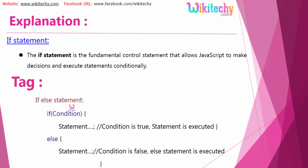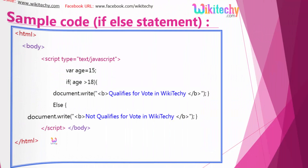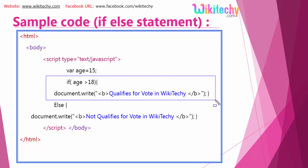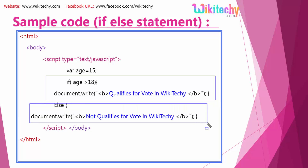Now let's move on to the if-else condition. If the condition is satisfied, this statement will be executed; otherwise, this statement will be executed — that's your if-else statement. Here is a sample piece of code: if age is greater than 18, it qualifies for vote; or else, this other condition will be executed.